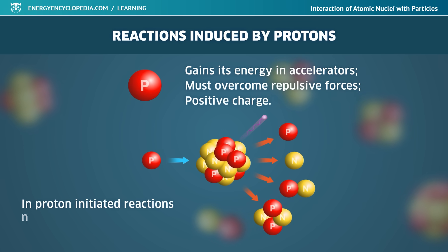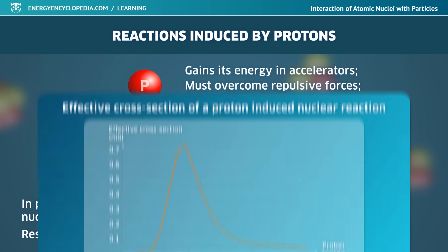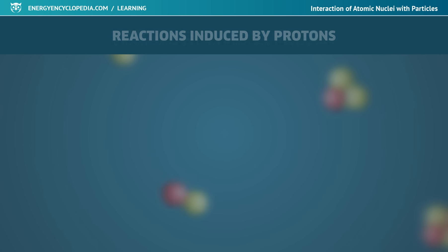In proton-initiated reactions, nuclear transmutation occurs and the resulting nuclei often show beta-radioactivity. The cross-section of proton-induced reactions first increases with increasing proton energy, but after reaching a certain maximum value, it decreases again at the same rate.